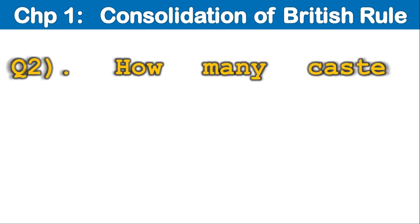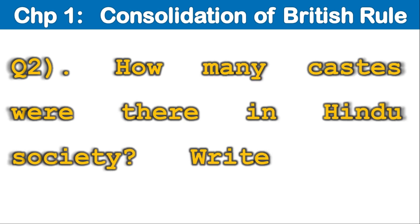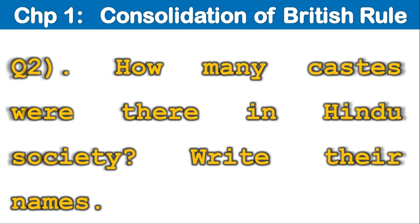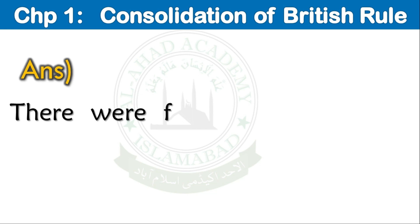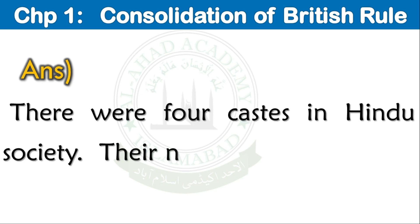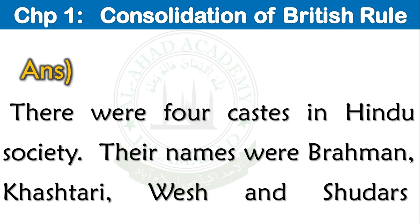Question number 2: How many castes were there in Hindu society? Write their names. Answer: There were 4 castes in Hindu society. Their names were Brahman, Kashtari, Vesh, and Shudars.